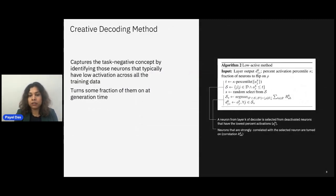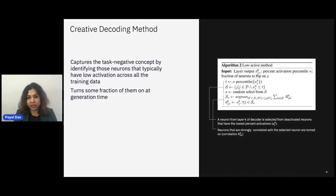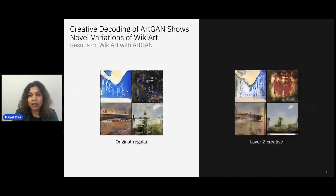At the algorithmic level, our goal is to capture the task-negative concept found in the human brain during creative tasks. We identify neurons that typically have low activation across all training data, pick one such neuron, and select all neurons strongly correlated with that inactivated neuron. We then turn on — activate — all those strongly correlated neurons during decoding time.